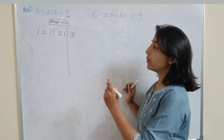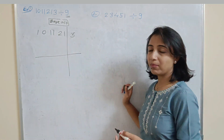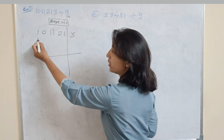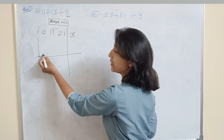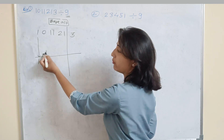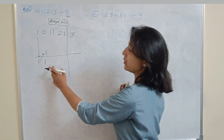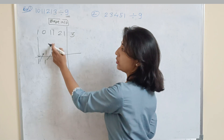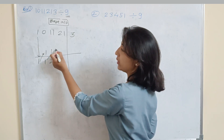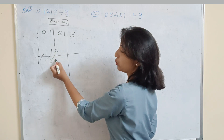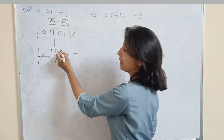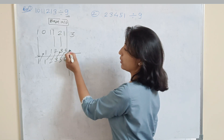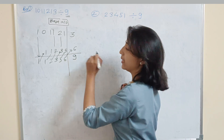Since we are dividing by 9, and 9 is only 1 less than 10, the first number is written as it is. Then we add that number to the next digit. So 1 added to 0 gives 1. Add 1 to the next number: 1 plus 1 is 2. Add 2 to the next number: 1 plus 2 is 3. Add 3 to the next: gives 5. Add 5 to the next: gives 6. Add 6 to the next: gives 9.